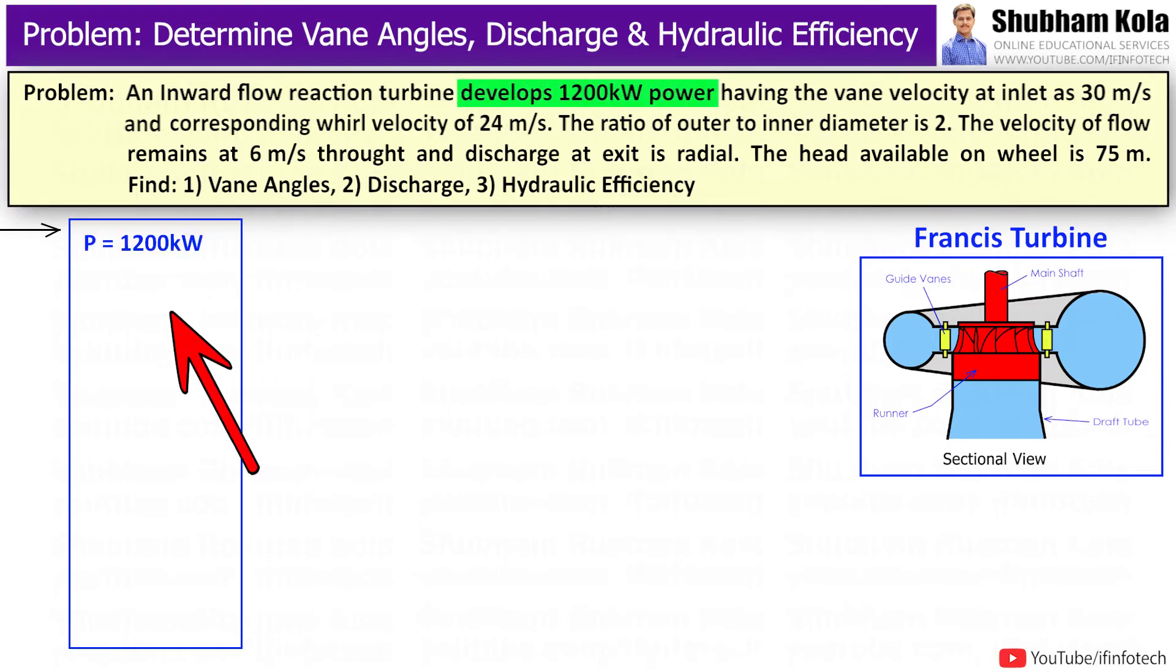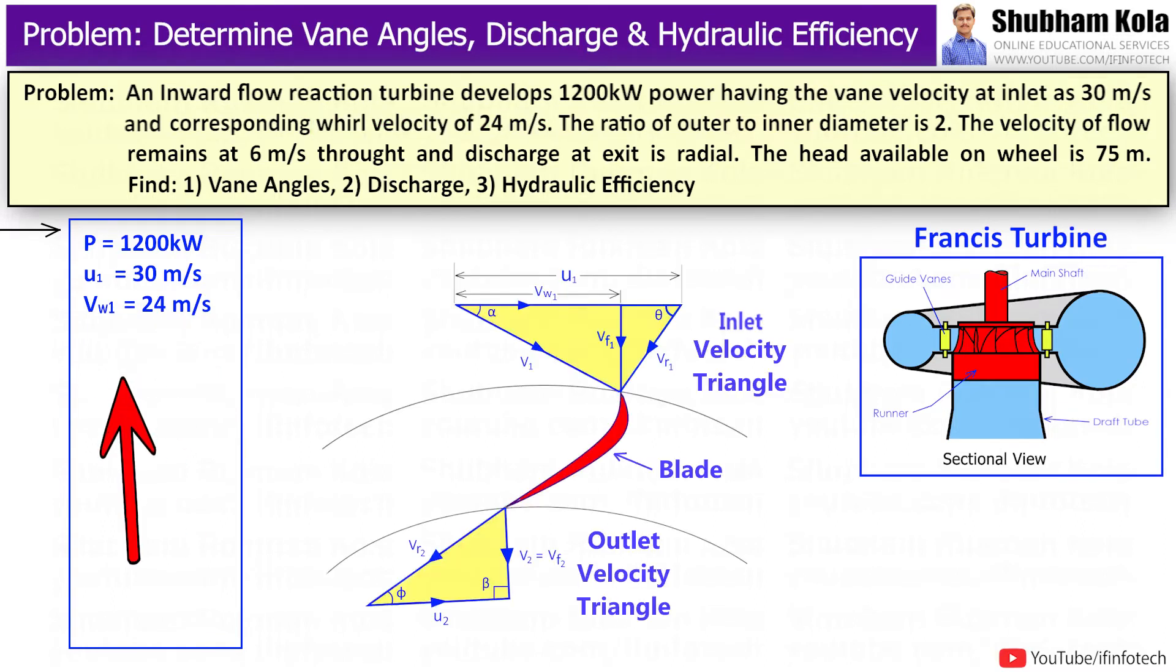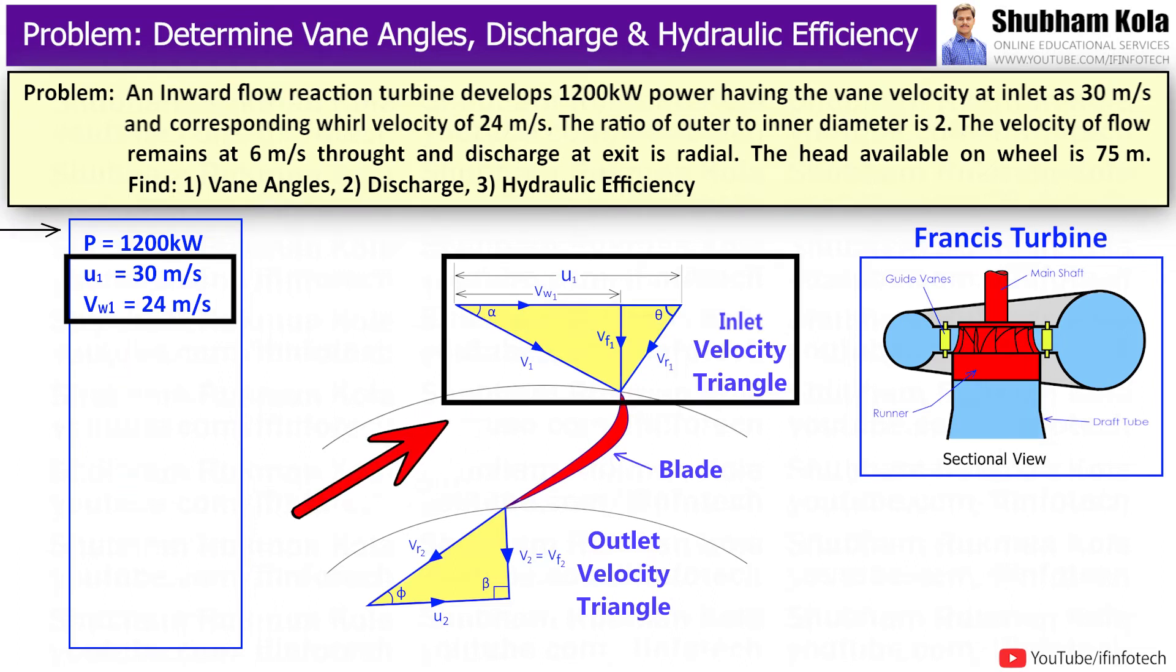Power developed by runner is given as 1200 kW, vane velocity at inlet is 30 m/s, wheel velocity at inlet u₁ is 24 m/s. Here, since u₁ is greater than vw₁, the velocity triangle at inlet and outlet can be drawn like this.